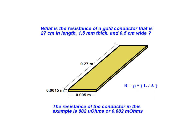The resistance of the conductor in this example is equal to 882 micro-ohms, or 0.882 milli-ohms.